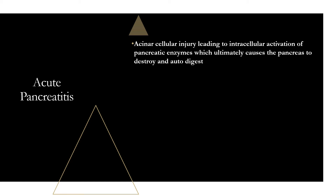As far as what causes acute pancreatitis: within the pancreas, there are cells called the acinar cells. The acinar cells are responsible for the exocrine function of the pancreas — they store, synthesize, and secrete digestive enzymes. If these cells get injured, whatever the cause, they can release these digestive enzymes within the cells, which leads to digestion of the cells themselves, causing autodigestion of the pancreas.